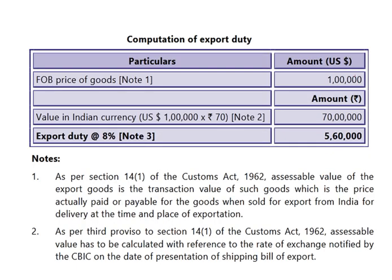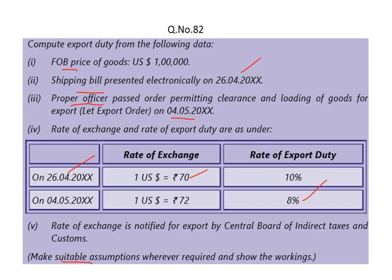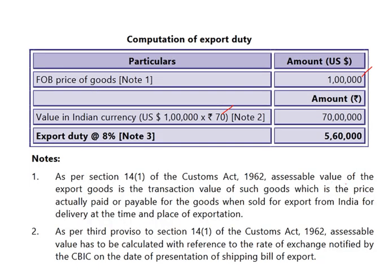So the solution is like this: FOB is 1 lakh US dollar, multiplied by 70. Why 70? Because the bill date is 26th April and on that date 70 rupees was the exchange rate - that rate is taken. So 70 into 1 lakh is 70 lakh. Actually 1 lakh into 70 is 70 lakh, so 8% on this amount gives you the export duty - how much here? 8% of 56 lakh, so you get 5 lakh 60 thousand.